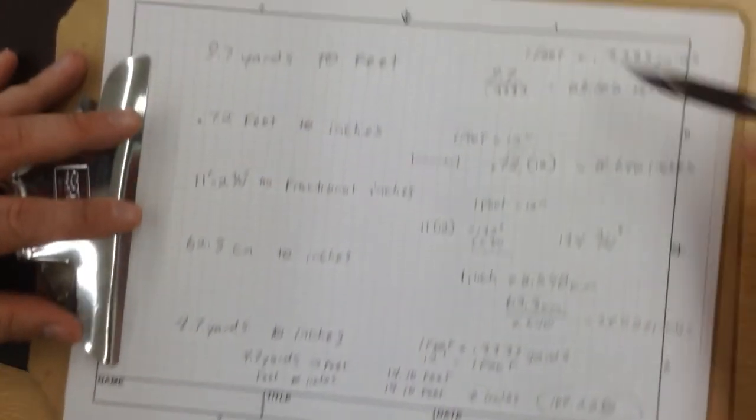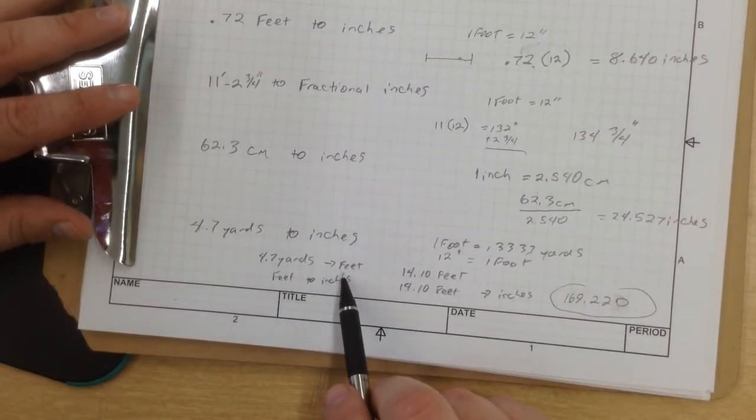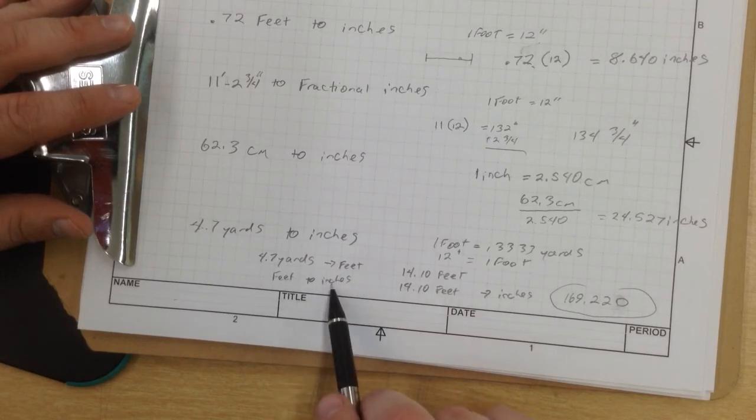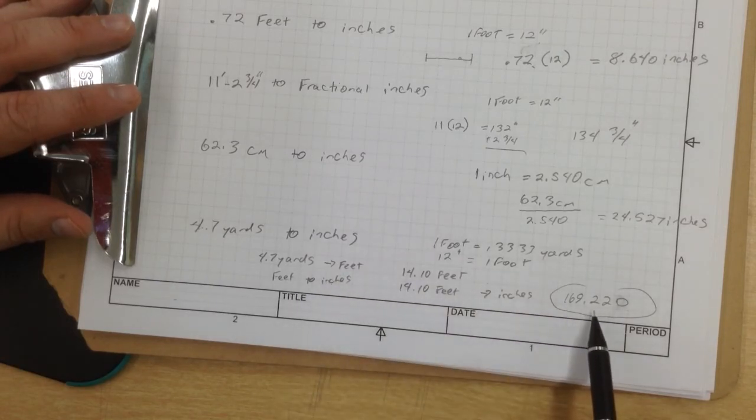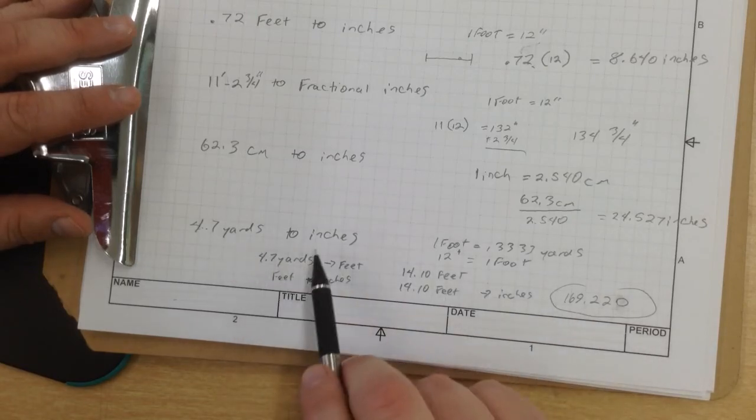So, up here, you figured out how to convert yards to feet. So, first convert yards to feet, then convert the feet to inches, and you come up with 169.22 and 4.7 yards to inches.